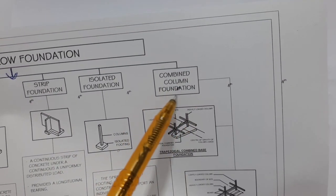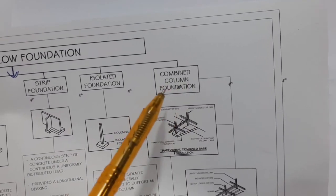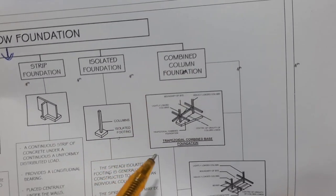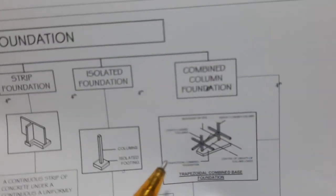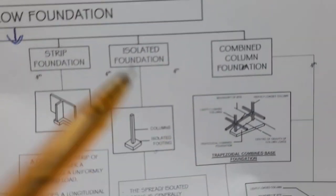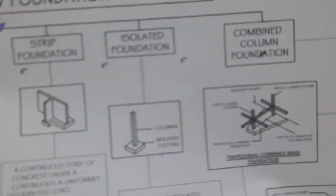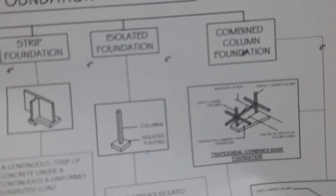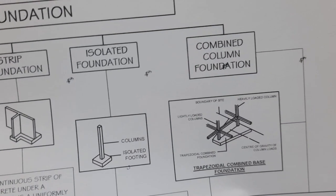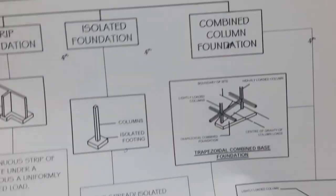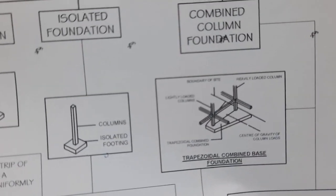The last type is combined footing, also called combined column foundation. You can see all the details here — let me focus the camera so you can see clearly.